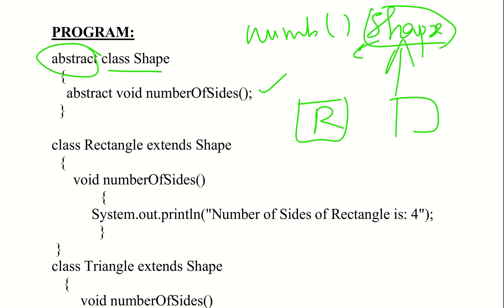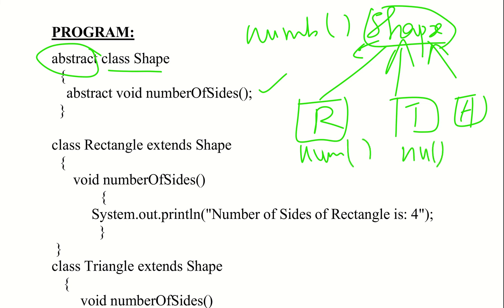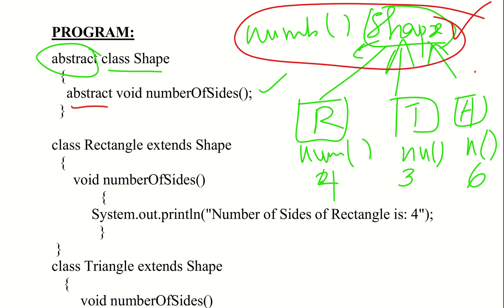The three subclasses are Rectangle, Triangle, and Hexagon, each extending the Shape class. In each subclass, we define the number of sides method. The definition shows: Rectangle has 4 sides, Triangle has 3 sides, Hexagon has 6 sides. We will create this using the abstract keyword.